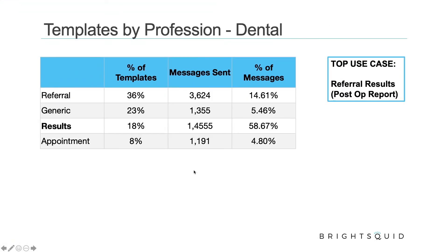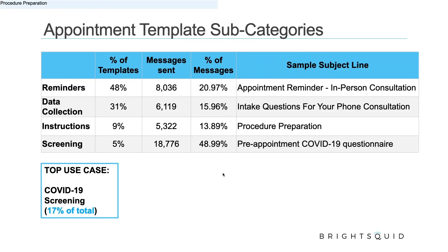Procedure preparation is a significant category — instructions for upcoming procedures like ear syringing, surgery, or lab work, reminding patients what to do beforehand. Screening is a big one, with COVID-19 being the predominant use case. Other screening use cases include patients predisposed to certain conditions, with questions about age, weight, and lifestyle. Screening broadly encompasses many different things, and right now screening for COVID and identifying at-risk patients is top of mind.